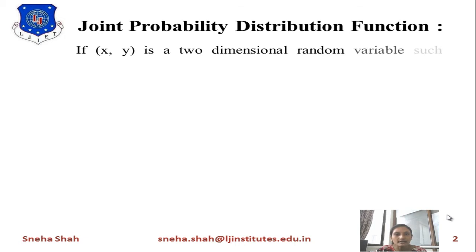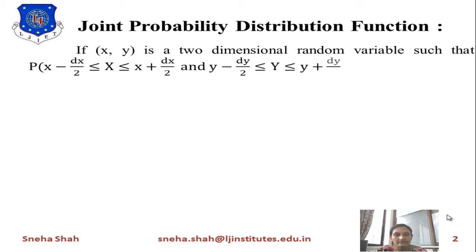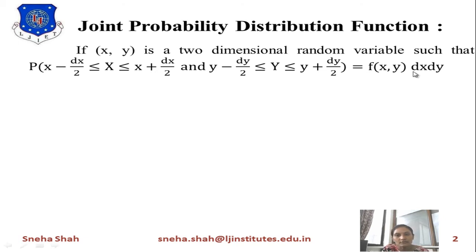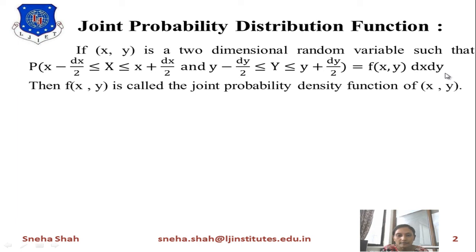Joint probability distribution is a combined combination of x and y. It is represented as: if (x, y) is a two-dimensional random variable such that the probability of x being in between x − dx/2 to x + dx/2, and y being in between y − dy/2 to y + dy/2, equals f(x, y) dx dy. Here dx and dy represent small changes. So f(x, y) is called the joint probability distribution function of x and y.